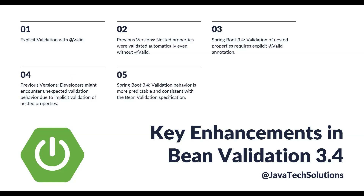In previous versions of Spring Boot, validation of nested properties within @ConfigurationProperties classes could be a bit unpredictable. Nested properties were validated automatically even without the @Valid annotation, which sometimes led to unexpected behavior. Spring Boot 3.4 changes this by aligning more closely with the bean validation specification.